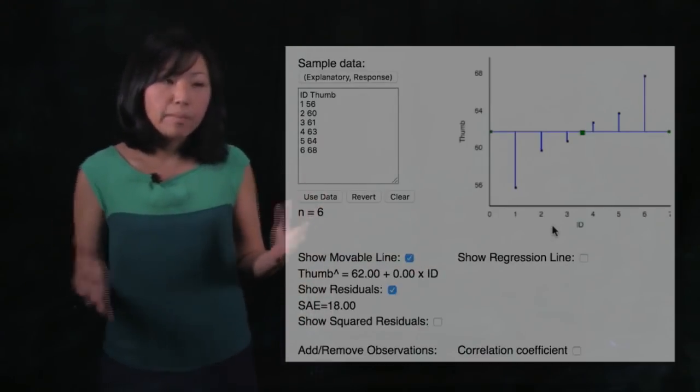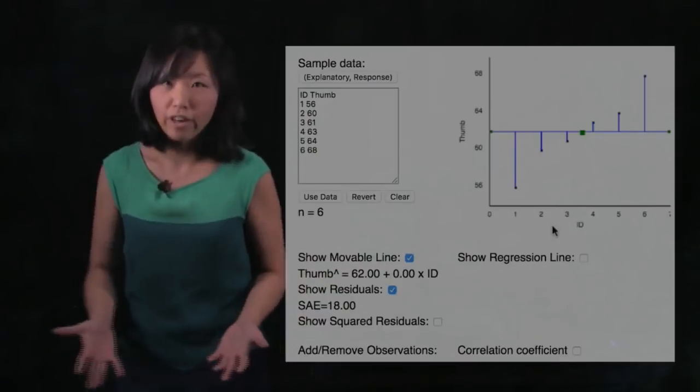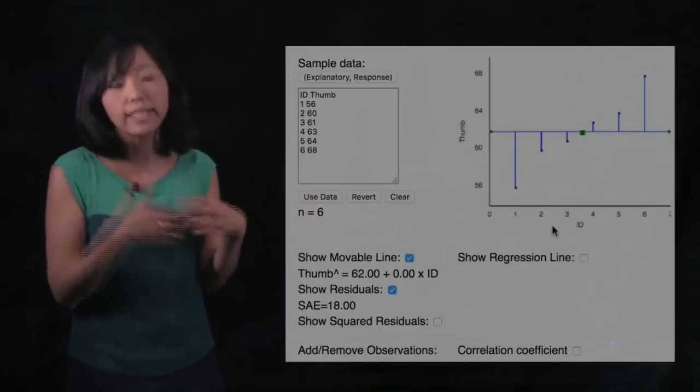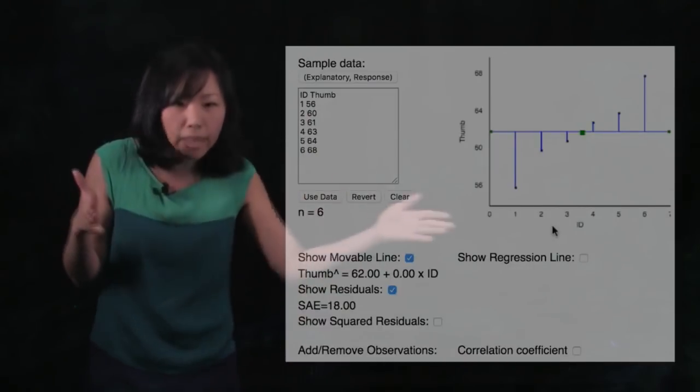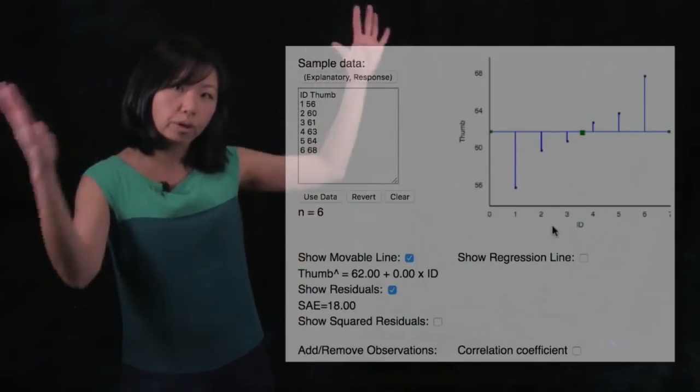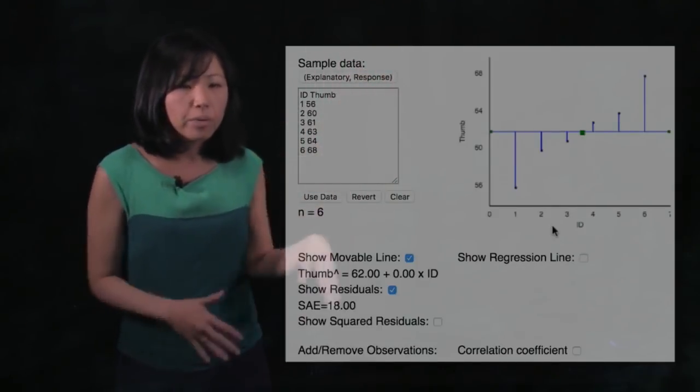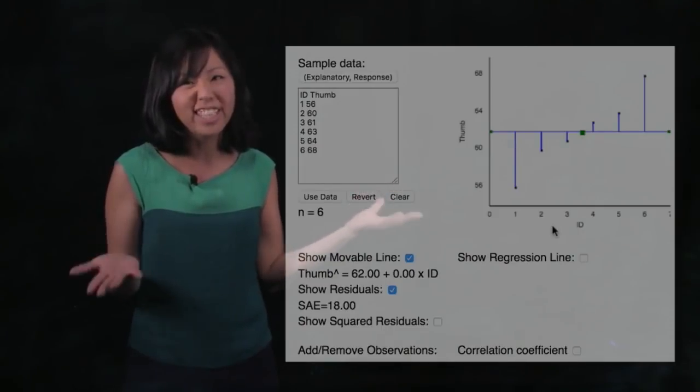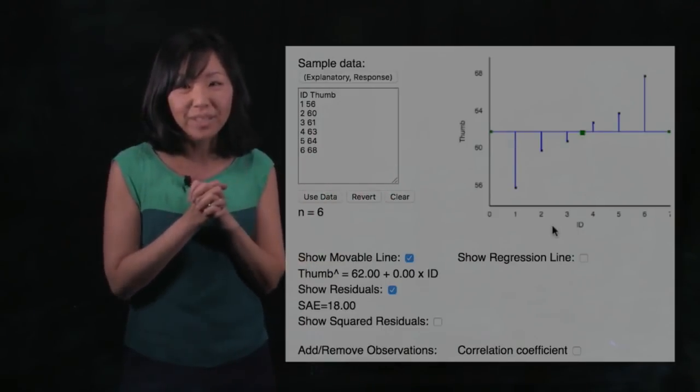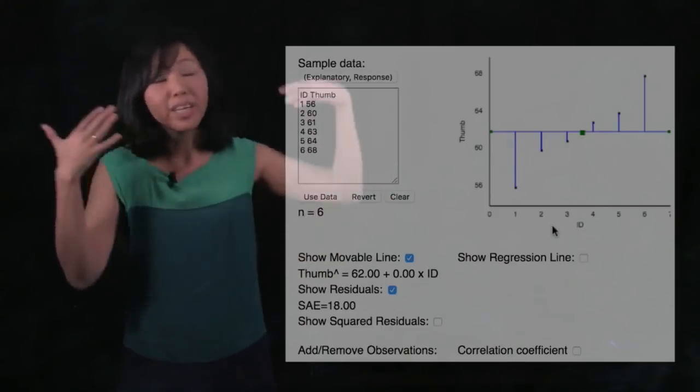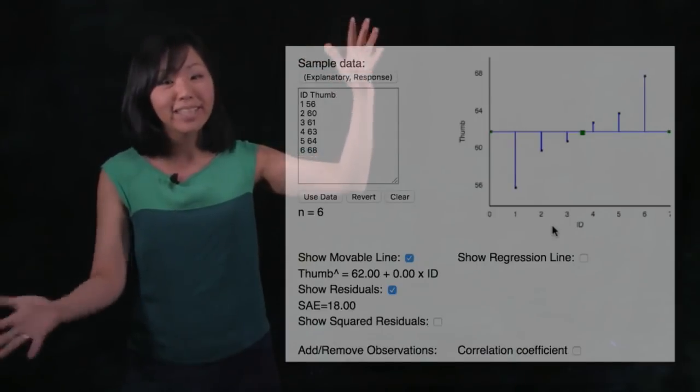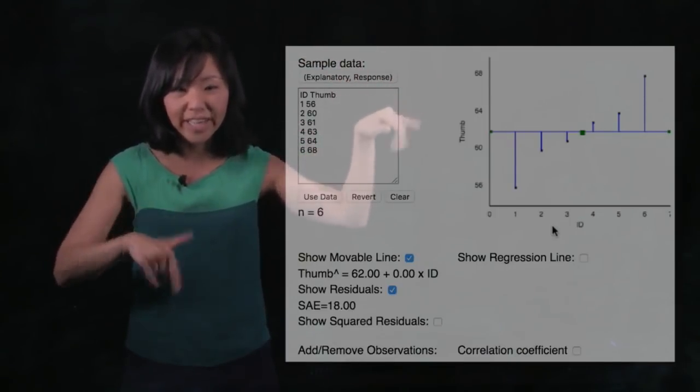Alright, so now let's think about total error. Because now we see there's error in this data set for every single data point. But what about the total error around this model? Well we already talked about why we can't just add up all the residuals because if the mean is your model and the residuals are perfectly balanced, they will zero out. They will cancel each other out.